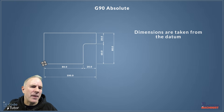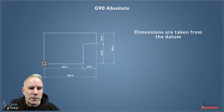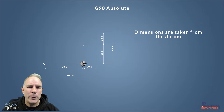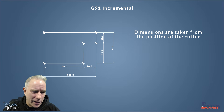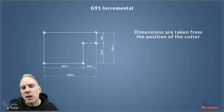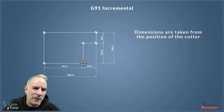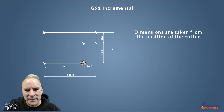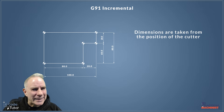Another thing that confuses people when starting out is the difference between absolute and incremental programming. Absolute is defined by G90 — it takes all dimensions from the same fixed datum point. As you can see here, the datum is on the bottom left corner and every time we move the cutter we give it a dimension from that datum; it never moves. With incremental programming we use G91 — we program each next position of the cutter from its previous position. So we might move 80 millimeters to the right, and the next move continuing that direction would be 20, not 100 — whereas in absolute it would be 100 because everything comes from the same point.